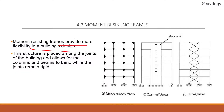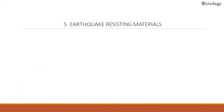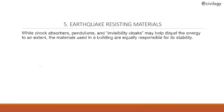Moment resisting frames provide more flexibility in a building's design. The structure is placed among the joints of the building and allows the columns and beams to bend while the joints remain rigid.